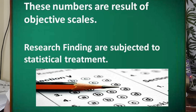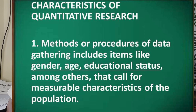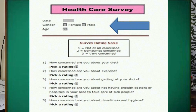Research findings are subjected to statistical treatment. As a characteristic of quantitative research, methods or procedures of data gathering include items like gender, age, and educational status, among others that call for measurable characteristics of the population. Gender, age, and educational status are essential in quantitative research because they have their preferences and stands. Male and female are different, so we have to consider that. This is illustrated in a sample healthcare survey questionnaire showing date, gender, and age.